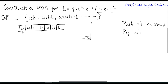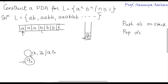Let's solve it. Initially at state q0, when I am reading an A and my stack top is Z0, I perform a push operation — that is, A on top of Z0. I put a loop over here.